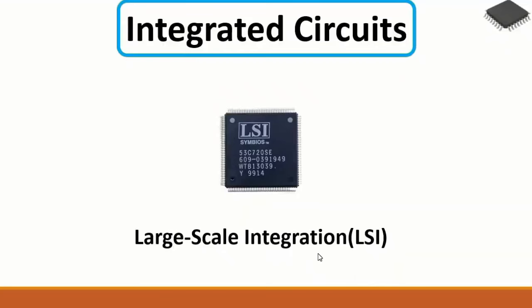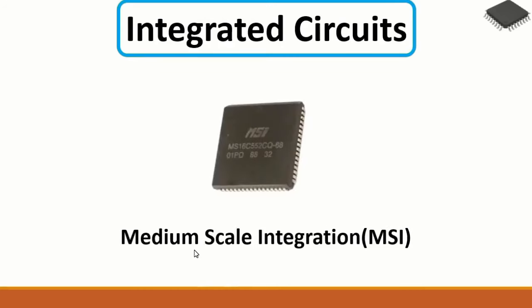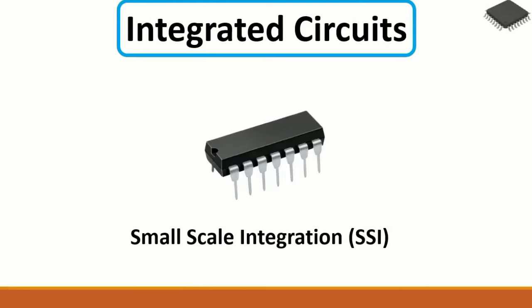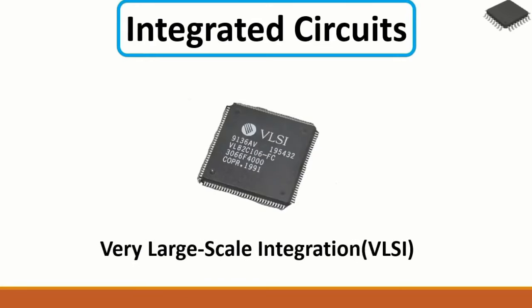Then we have another kind of IC: the Medium Scale Integration - MSI - which also has pins on four sides. Then the Small Scale Integration - SSI - also called a DIP IC because it has terminals only on two sides. Then we have the Very Large Scale Integration - VLSI - one of the biggest ICs you can find in motherboards with a lot of pins, potentially more than 228.